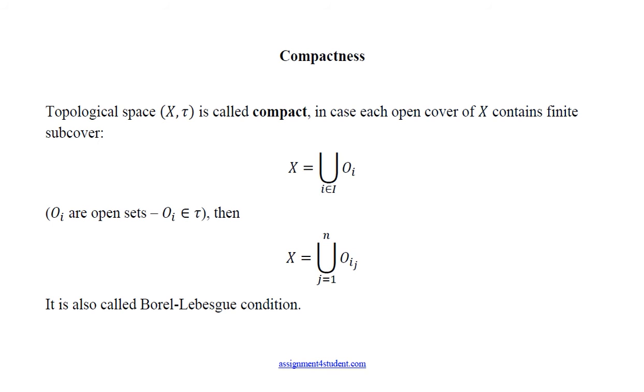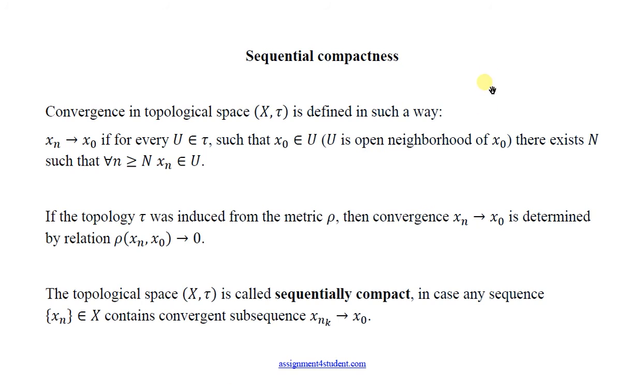But there are some other kinds of compactness. For example, sequential compactness which is defined in terms of convergence. Convergence in topological space is defined in this way. We say that x_n, the sequence x_n converges to x_0 if for any open neighborhood of x_0 we can pick such large N, that there is infinite number of elements from the sequence x_n that belong to this open neighborhood.